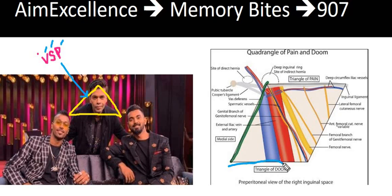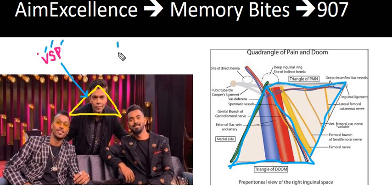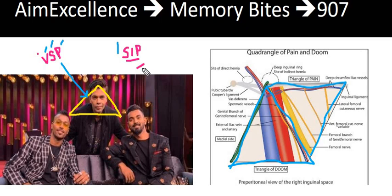The triangle of doom, and beside that we can also have another triangle known as the triangle of pain. For that we have a mnemonic — SIP: Spermatic vessels, Ileopubic tract, and Peritoneal fold. This is SIP, and this is for the triangle of pain.